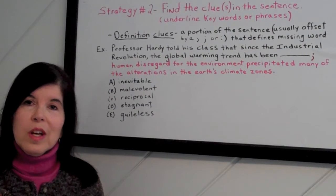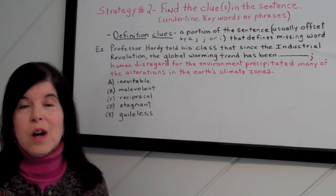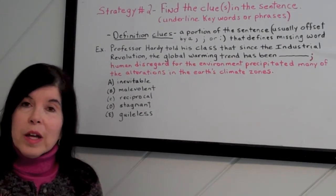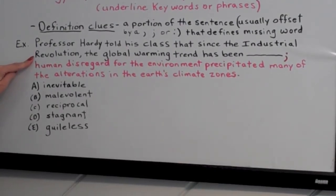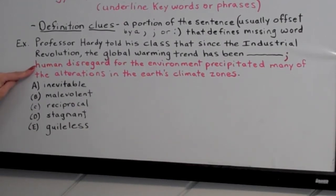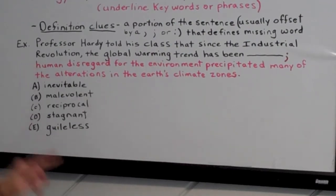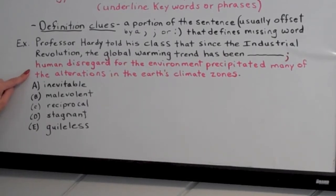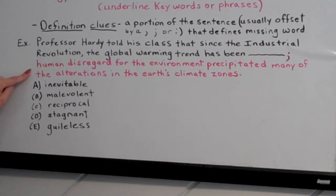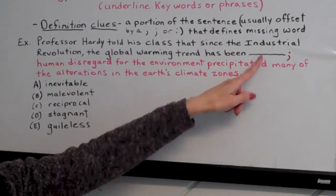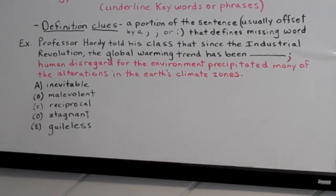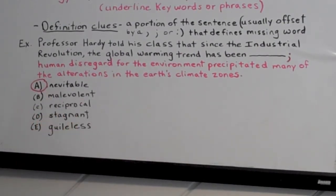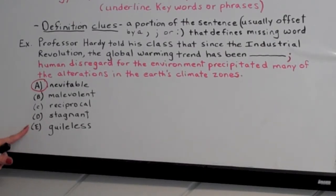Definition clues are huge. A definition clue occurs when a portion of the sentence offset by a comma, semicolon, or colon actually defines the word in the blank. For example: 'Professor Hardy told his class that since the Industrial Revolution, the global warming trend has been blank; human disregard for the environment precipitated many of the alterations in the Earth's climate.' The semicolon introduces the clue — human carelessness caused many changes, so it was bound to happen. The answer is inevitable, which means bound to happen. Other choices: malevolent means wishing evil, reciprocal is equally shared, stagnant means sluggish, and guileless means honest.